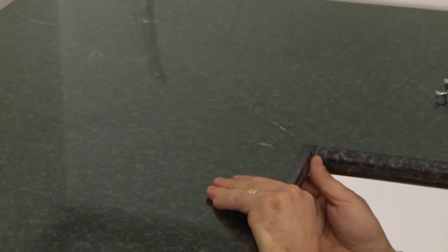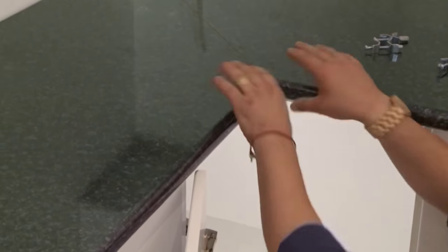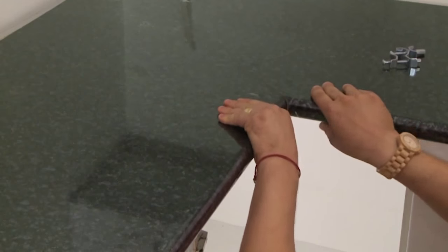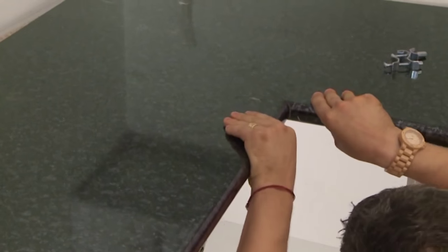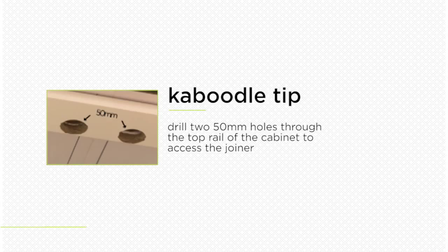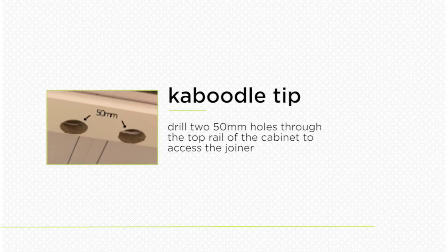You may need to adjust the benchtop slightly to ensure the front edges are aligned. As a tip, you may need to bring the benchtop forward slightly to work on the front joiner. If this is not possible, drill a 50mm hole through the top rail of the cabinet to access the joiners.